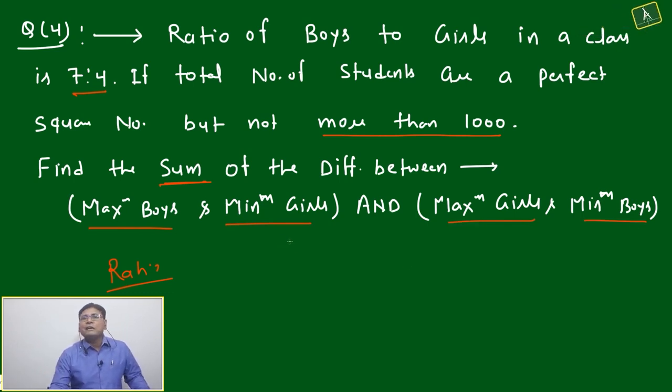These four different variables are there that you should get. What is the value of these four variables: maximum boys, minimum girls, maximum girls, minimum boys. And you have to take difference of these two, you have to take the difference of these two, and you have to find the sum of that differences.